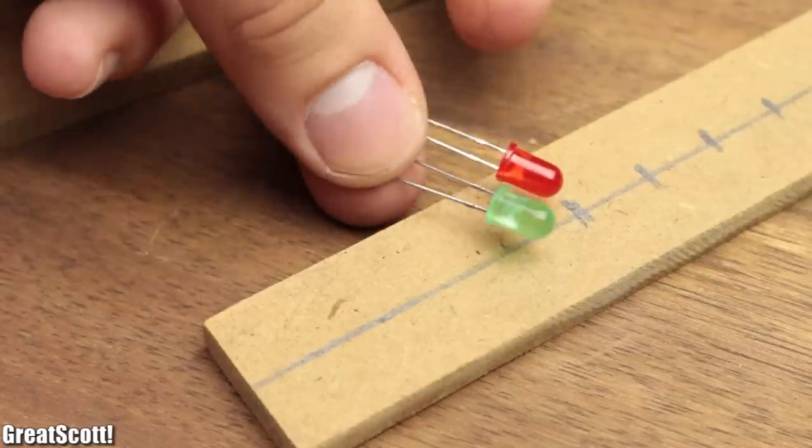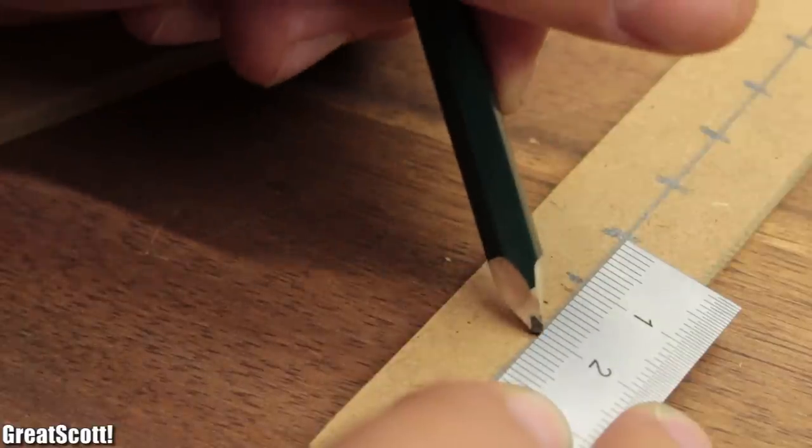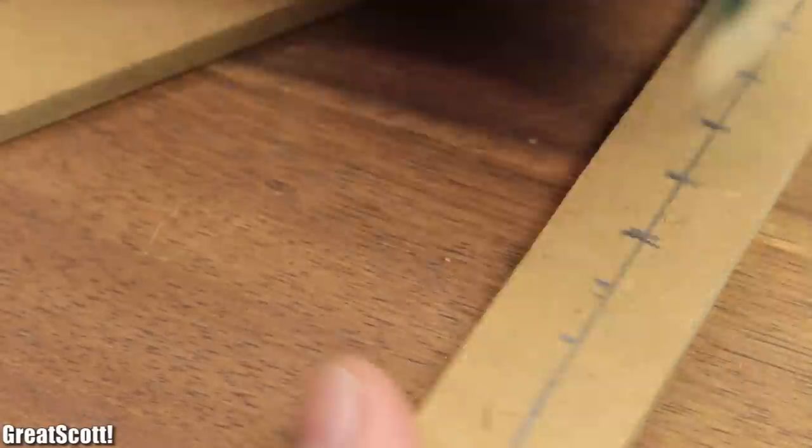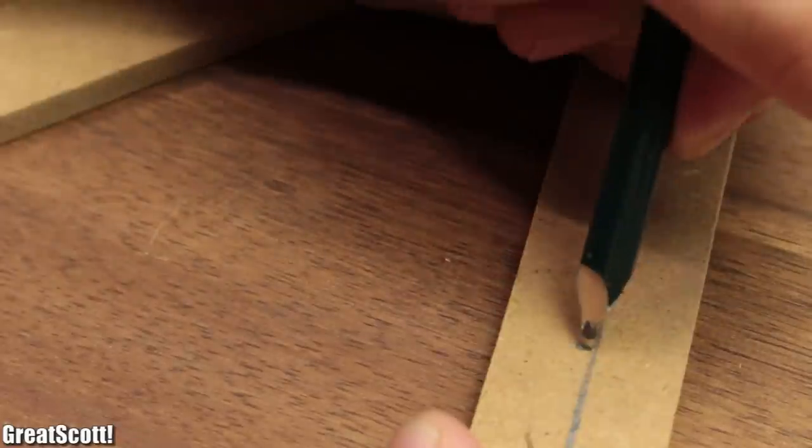And I also added two more markings for red and green 5mm LED which will later tell me the charging state of my batteries.